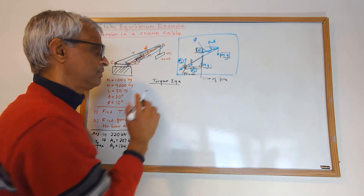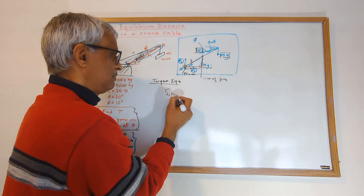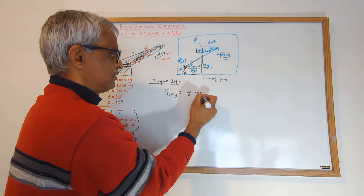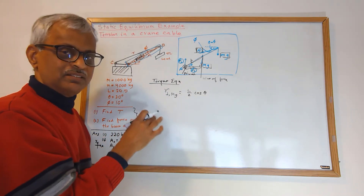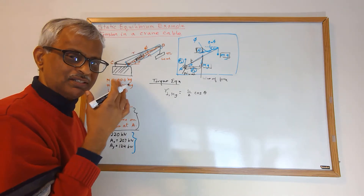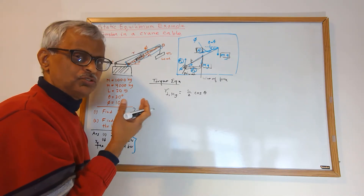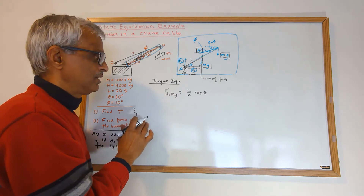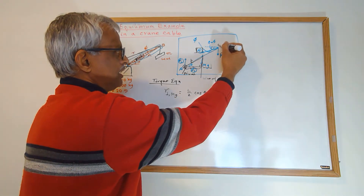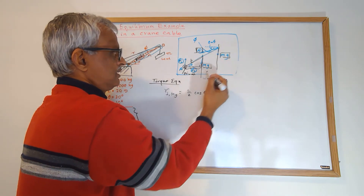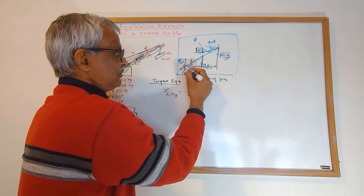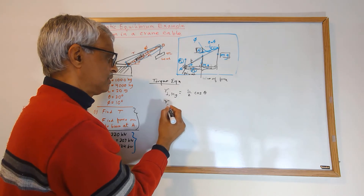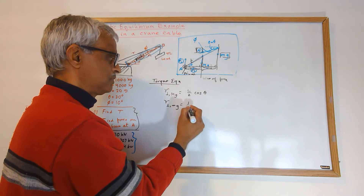The lever arm for big MG is the adjacent side in a right triangle, giving L/2 cosine theta. A reminder: don't just memorize 'lever arm is always sine theta' — always work out the triangle to see what you need. For the load force (little mg) at the end of the boom, the same process gives a lever arm of L cosine theta.